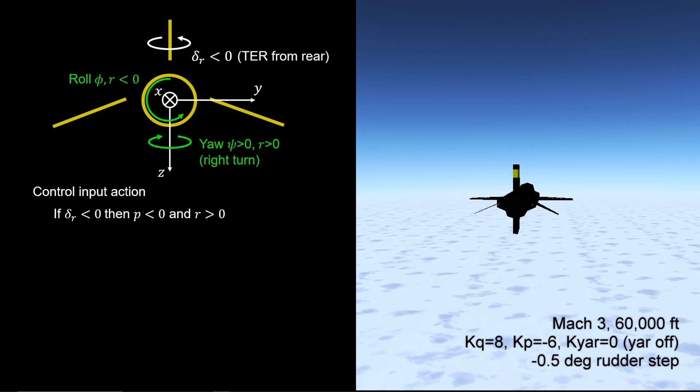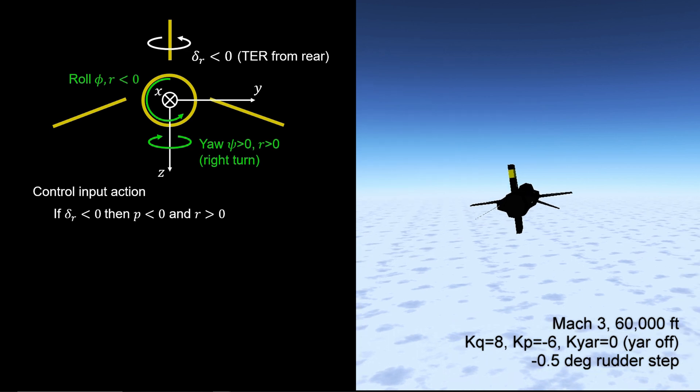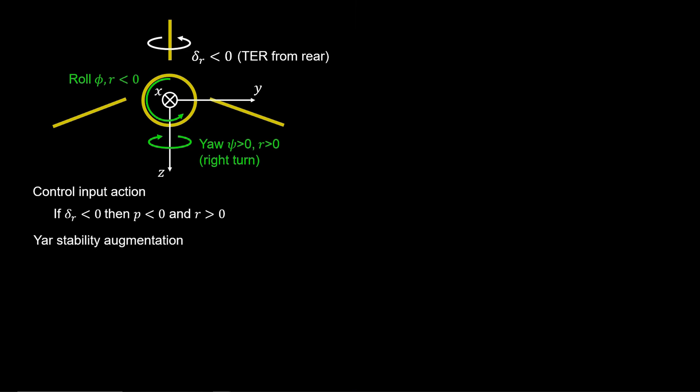To compensate for yaw-roll coupling, we use the so-called yaw interconnect to the aileron. First, note that negative rudder produces both positive yaw and negative roll. If negative rudder produces negative roll, then positive aileron change is needed to oppose the roll coupling. Thus, we propose roll correction through the aileron from positive yaw rate feedback.